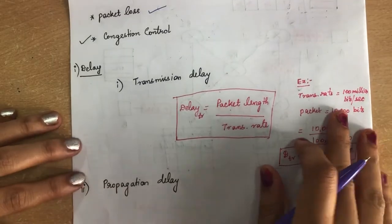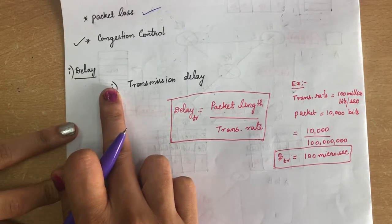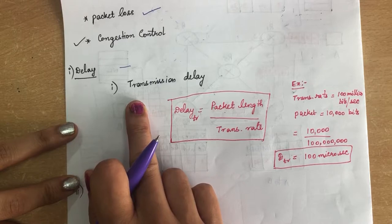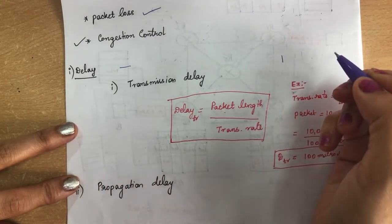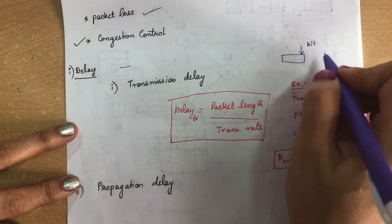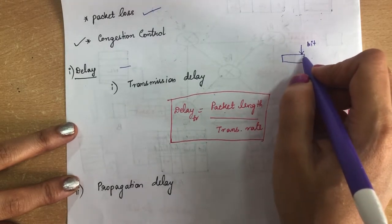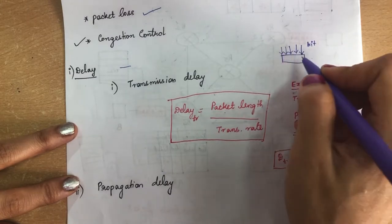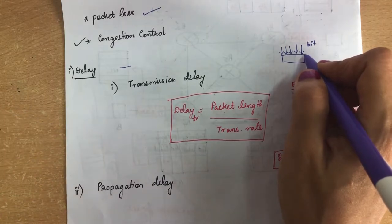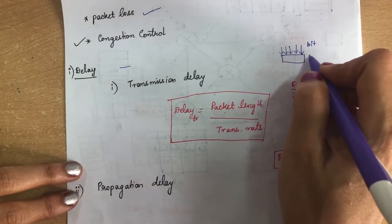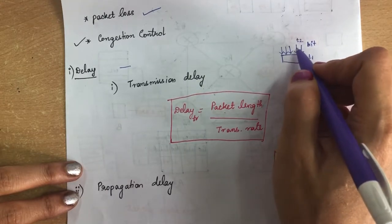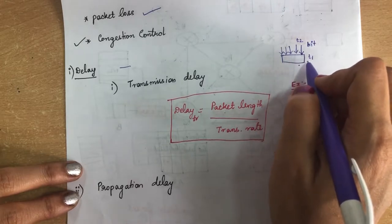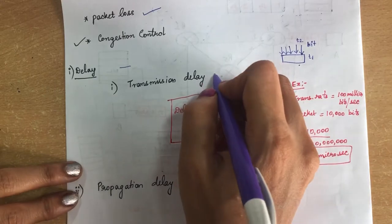Whenever a packet is sent from the source to destination, it encounters delay. The first delay we are going to see is transmission delay. Whenever a sender wants to send a packet, he puts bit one on the line, then the next bit, and likewise all the bits. There will be a transmission delay between putting these bits into the packet.